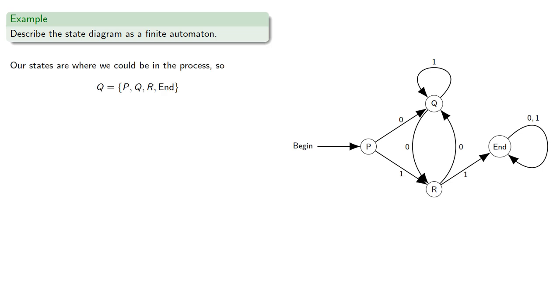So we have P, Q, R, and END. Now notice that the automaton only knows what to do for a 0 or 1, so our set of symbols will just be 0 and 1.